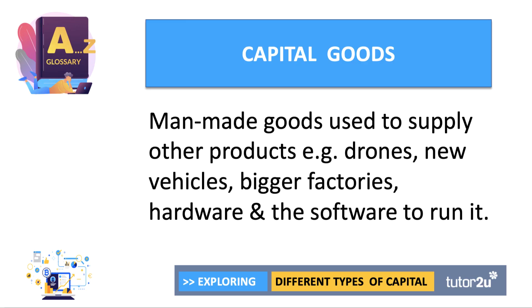Instead, when we talk about capital we talk about spending on capital goods. Capital goods are man-made goods used to produce or supply other products. Examples could be drones, new vehicles, building a bigger factory, installing more hardware and also the software to run computer systems.